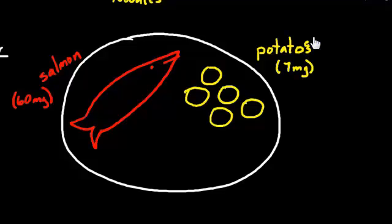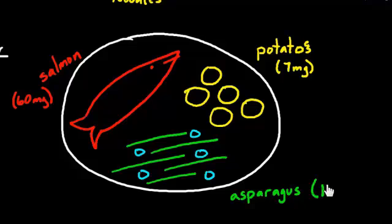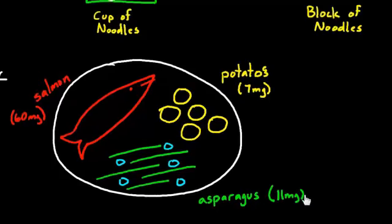So potatoes are great. Salmon is great. But I like my vegetables. And so what if I get some asparagus in there? So some roasted asparagus and there's a recipe for some mushrooms with the roasted asparagus. This meal is looking better and better. And so if I get some asparagus with the mushrooms, that's an additional 11 milligrams of sodium. So it's actually pretty reasonable.